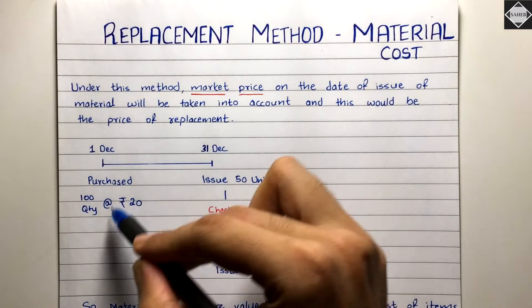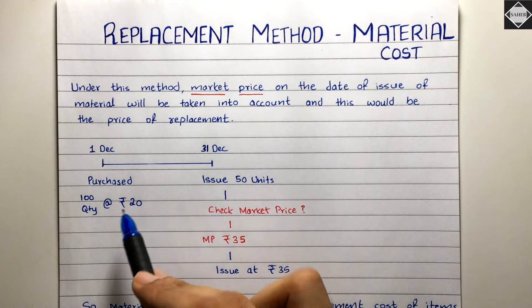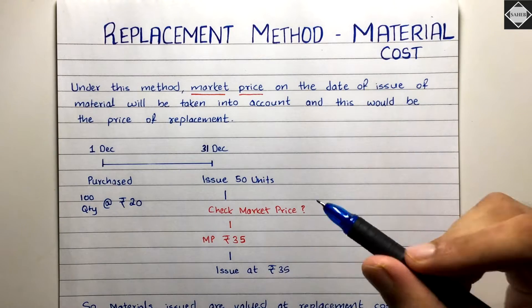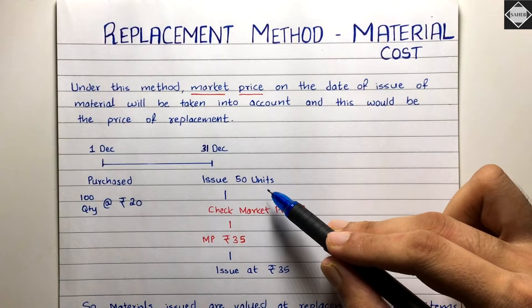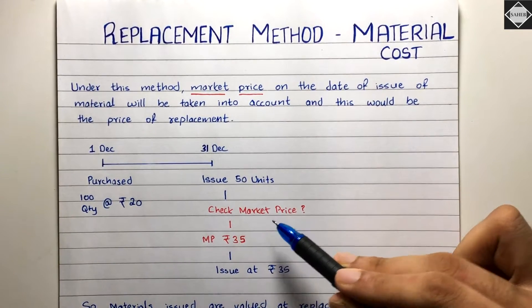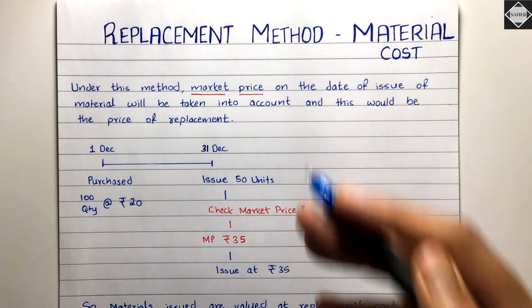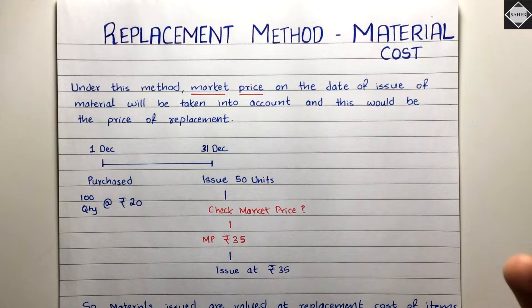So the rupees 20 purchase price becomes irrelevant. We are not using that. Whenever the production department requests any units and we issue them, we check the market price and issue at that market price. In questions on the replacement method, the market prices on those issue dates will be given to you.